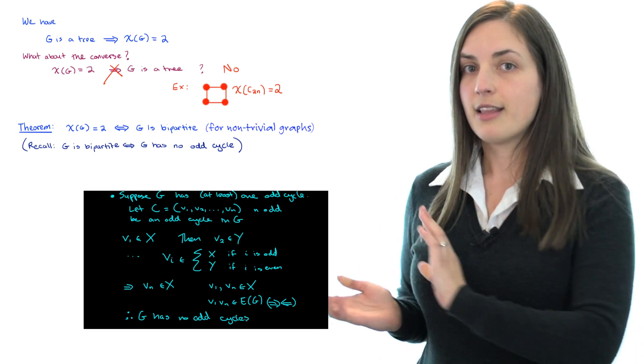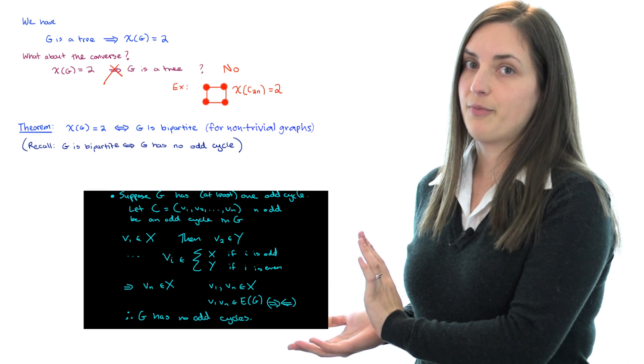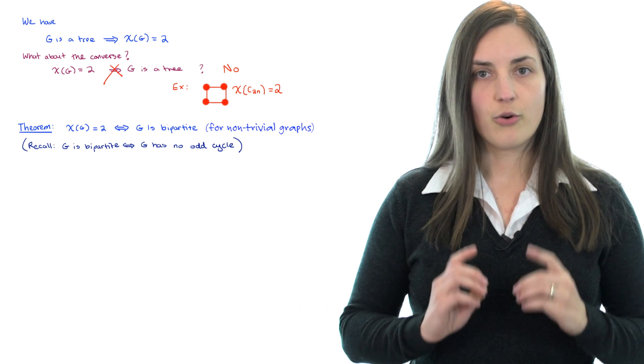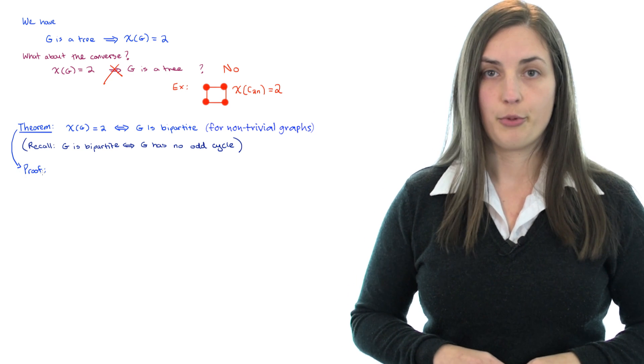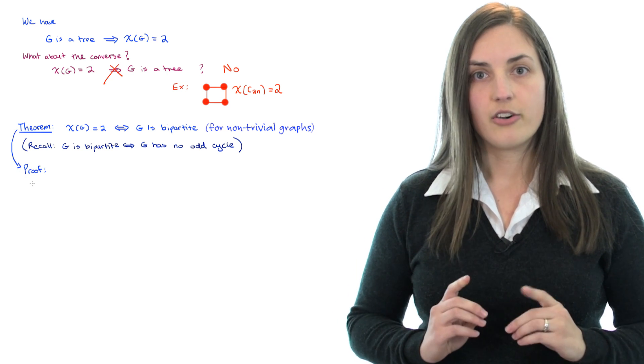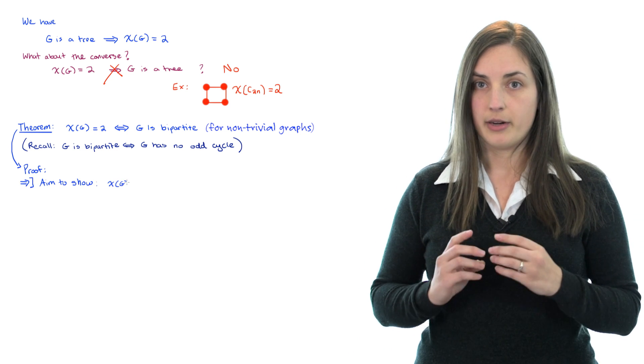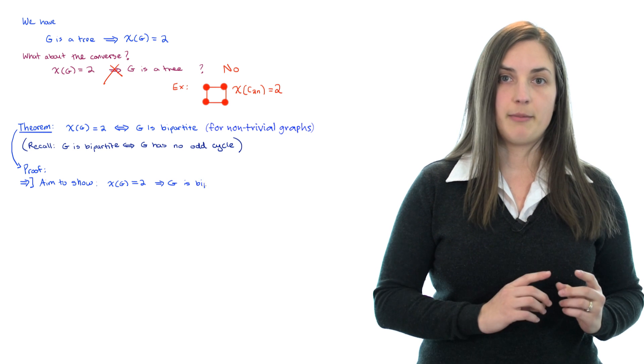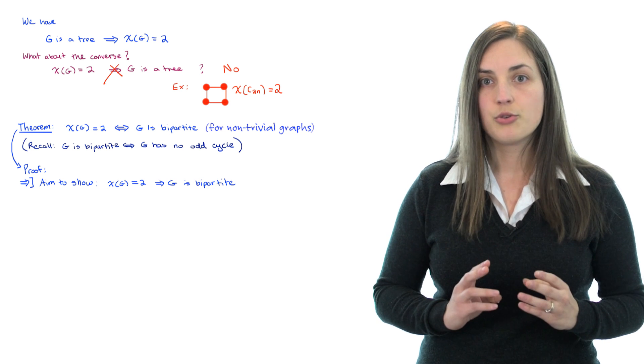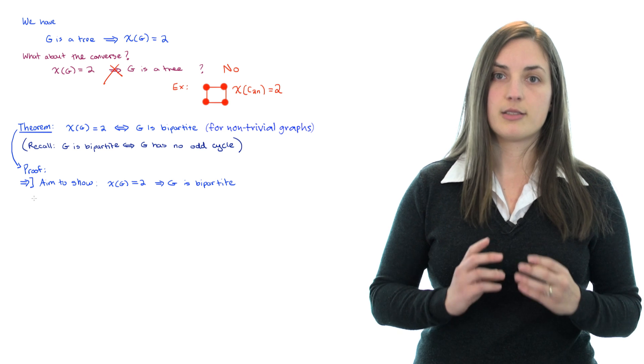If you need a reminder, then click here and check out the video. We're going to use this fact as we proceed through the proof. Let's start by thinking about the first direction. Here we aim to show that if the chromatic number equals 2, then the graph is bipartite. And we're going to do this by proving the contrapositive.